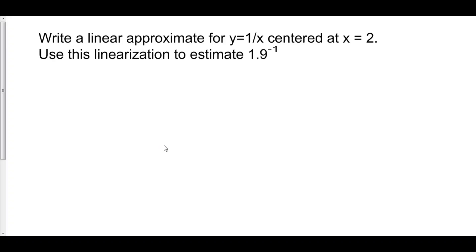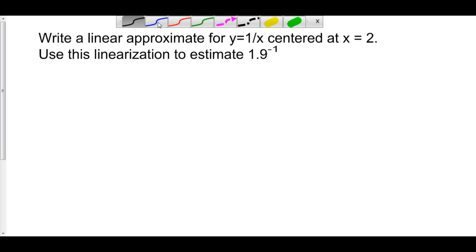Let's create a linear approximation for y equals 1 over x, centered at x equals 2. We'll use this linear approximation to estimate 1 over 1.9. There are two things that we need for a linear approximation: we need a point and we need a slope. Our point is 2 comma 1 over 2.